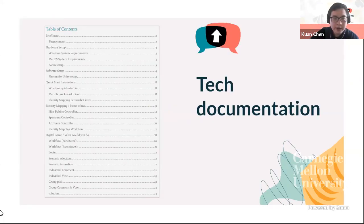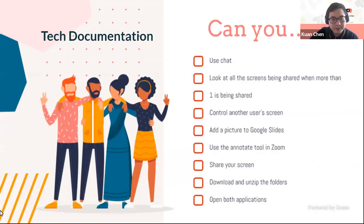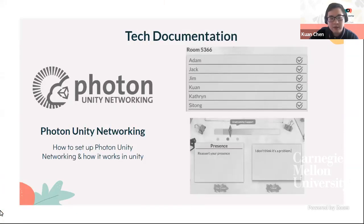For the tech part, we have completed the tech documentation, which would help to handle this project. One of the sections is our tech test, designed to ensure participants can communicate effectively over Zoom and make sure our applications work on their device for effective discussion. Another significant section explains how the full-time networking in Activity 2 works and how to change its settings so that networking functions like creating rooms and sending messages could be applied easily.